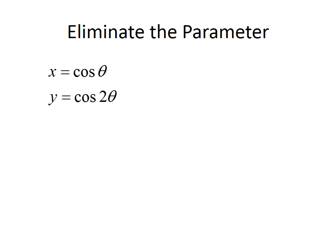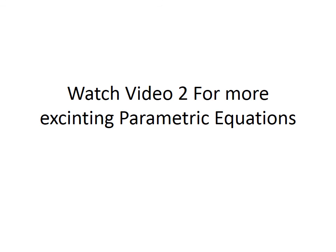This last problem, we once again are going to have to remember a pre-calc identity. And remember that cosine 2 theta is equal to 2 cosine squared theta minus 1. And since x is equal to cosine theta, I'm going to replace y with 2 cosine squared theta minus 1. But since x is equal to cosine theta, I can write that as y is equal to 2x squared minus 1. Okay, that's it for this video. Please watch the next video for more exciting, oh, I spelled exciting wrong, parametric equations. Have an amazing day.